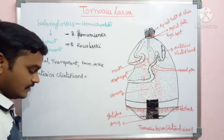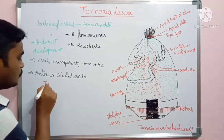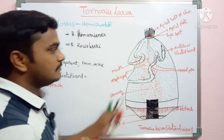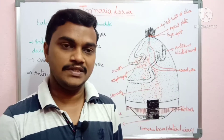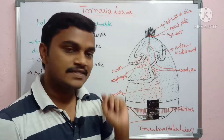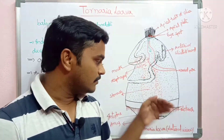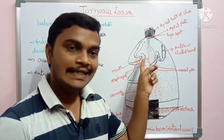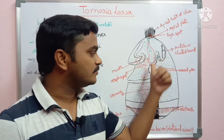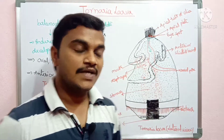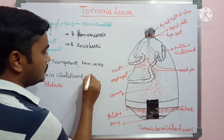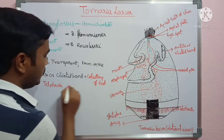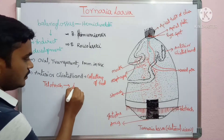There is one more band called the posterior ciliated band, also called telotroch. There is a small difference between these two bands: in the anterior ciliated band, the cilia is small in size, but in the posterior ciliated band, the cilia is long in size. The anterior ciliated band is useful for collecting food, while the telotroch and posterior ciliated band are useful for locomotion.